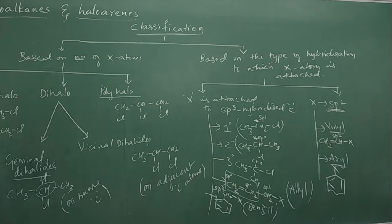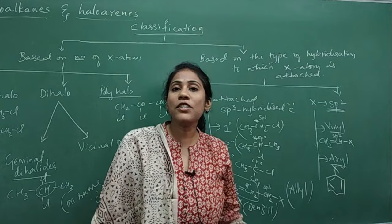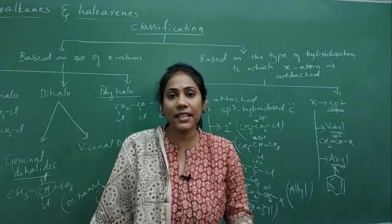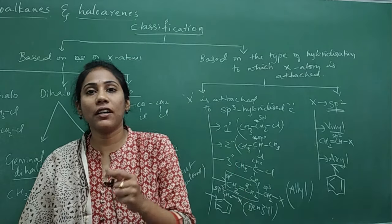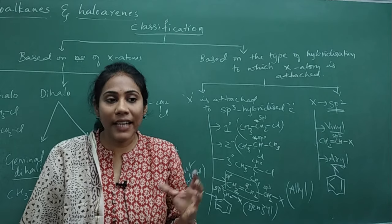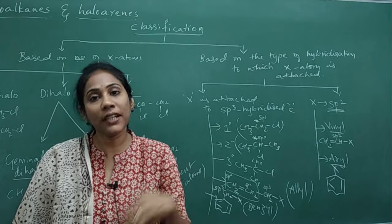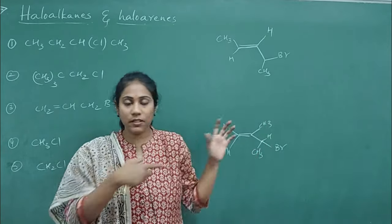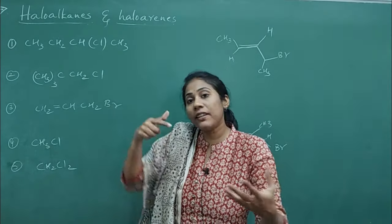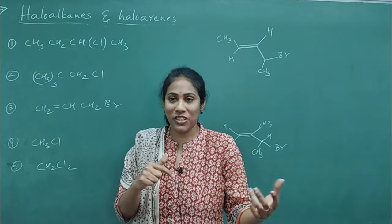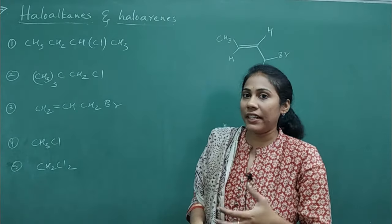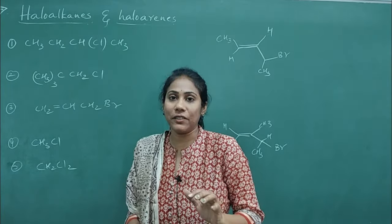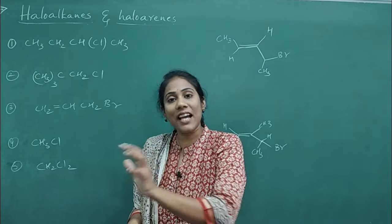Now let us talk about nomenclature. For nomenclature you should have the necessary basics from Class 11 chemistry organic chemistry videos. I will select a few examples from your NCERT textbook and discuss them. When you have Cl, Br, I, or any halogen atom, we consider it as a prefix — meaning its name is written at the beginning, not as a suffix.